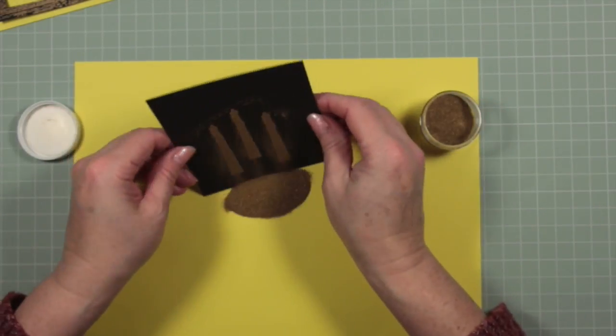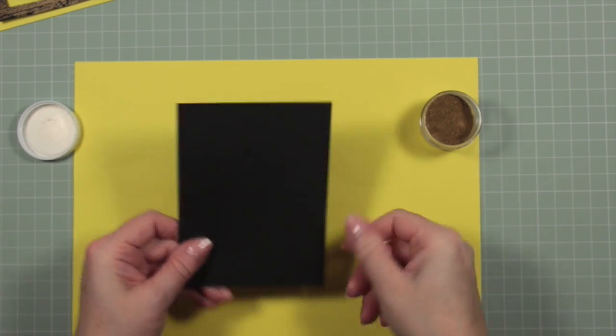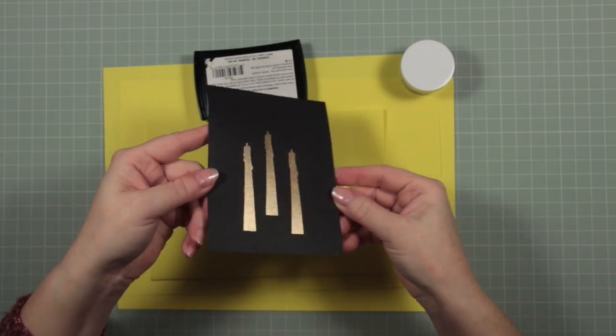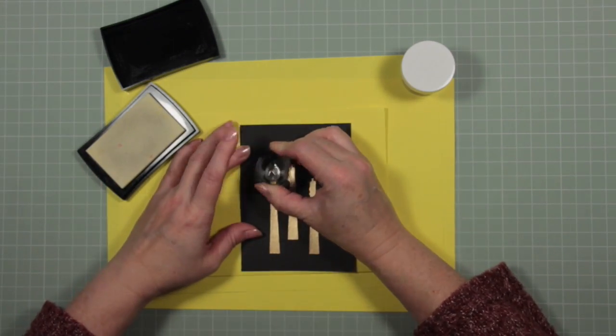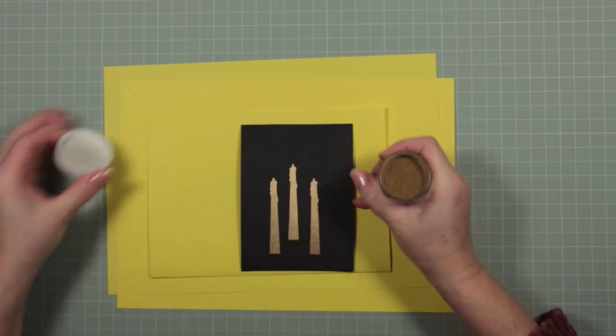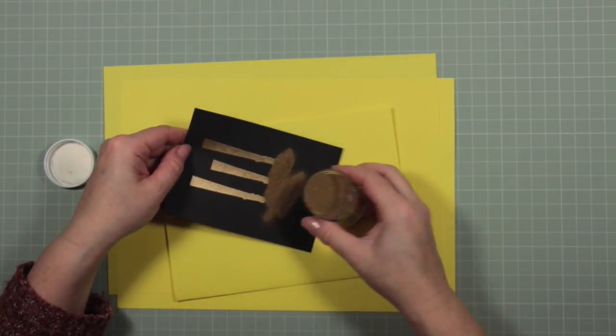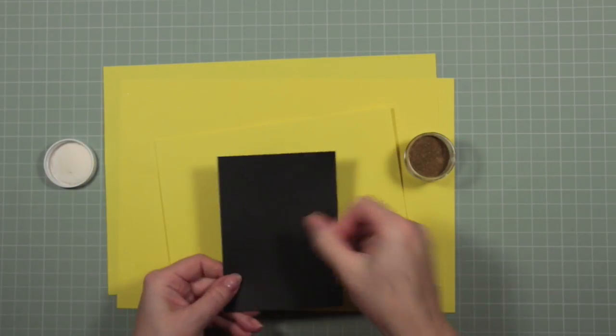Again I'm using my Altenew rose gold embossing powder. This is a lovely fine delicate powder, it gives the most beautiful effect and I've heat set my candles and now I'm adding the little flames that are part of this stamp set to the top and I will heat emboss those as well.